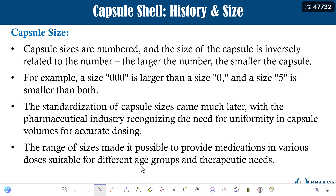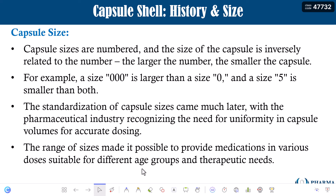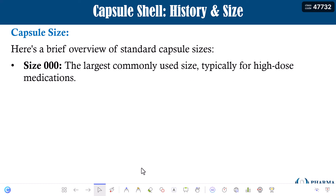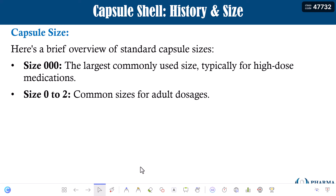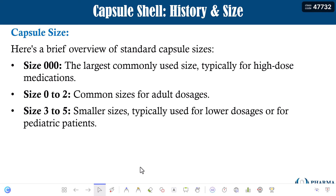The range of sizes makes it possible to provide medications in various doses suitable for different age groups and therapeutic needs. Smaller capsule sizes are suitable for pediatric products and the bigger ones are suitable for adults. Size triple 000 is the largest commonly used size, typically for high-dose medications over one gram. Size 0 to 2 is commonly used for adult dosage forms, and size 3 to 5 is commonly used for pediatric dosage forms.